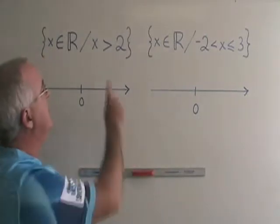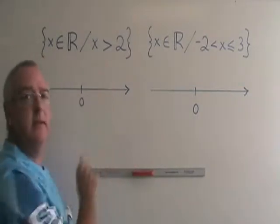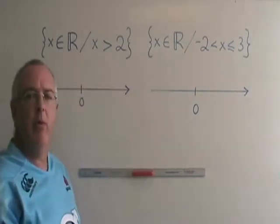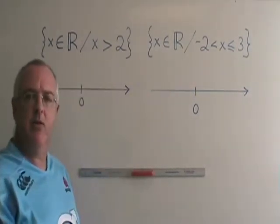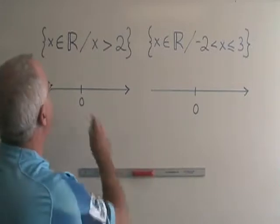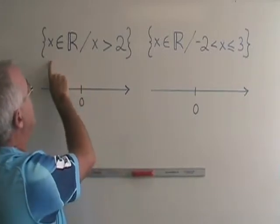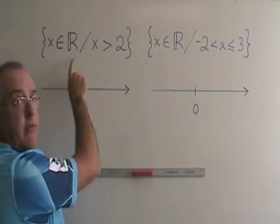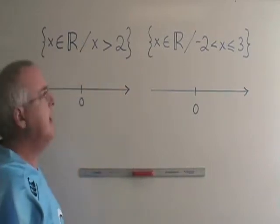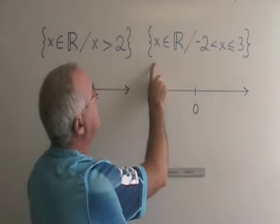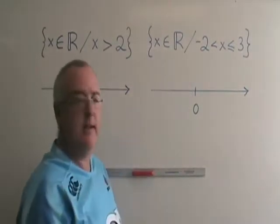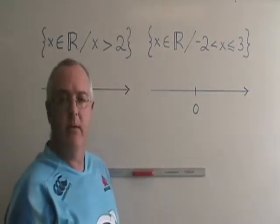Here we have two regions on the x-axis that are expressed in set-builder notation, and we are being asked to translate that into interval notation. The first region has x as an element of real numbers such that x is greater than 2. The second region is x is an element of real numbers such that negative 2 is less than x, which is less than or equal to 3.